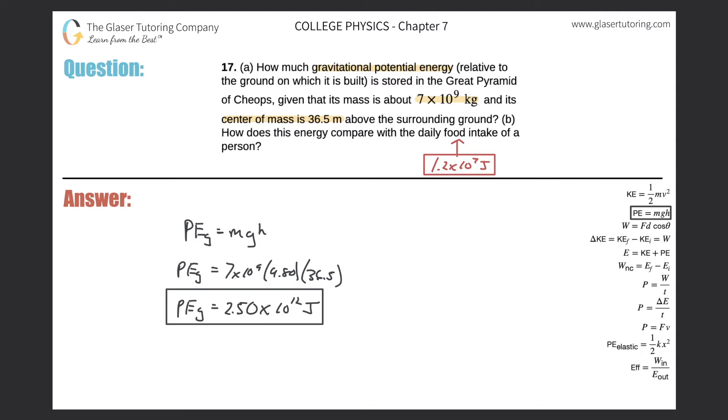Then letter B, it says how does this energy compare with the daily food intake of a person? So if you look it up in the table in the book, the daily food intake is 1.2 times 10 to the 7 joules.